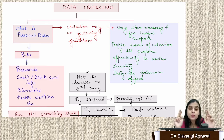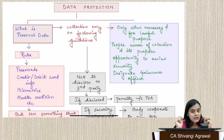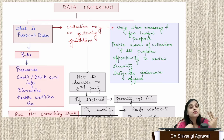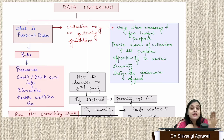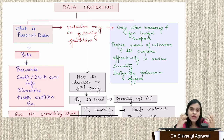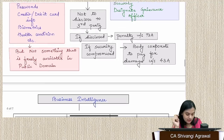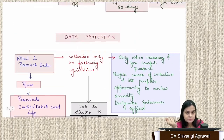It is the government's and organizations' duty to protect your data. Data protection refers to the set of policies implemented to protect sensitive data. Data can only be collected if it is for a lawful purpose, people are aware it's being collected, they are given an opportunity to review the data, its security is ensured, and a grievance officer is designated for complaints. Confidentiality must be maintained; disclosing to third parties attracts penalty under Section 72A. If security is compromised, damages apply under Section 43A.